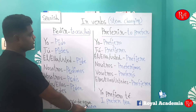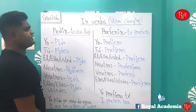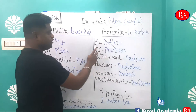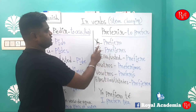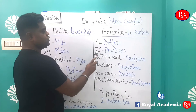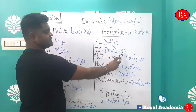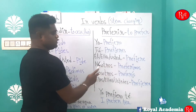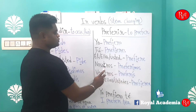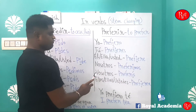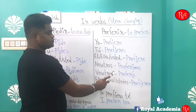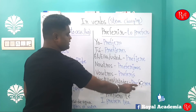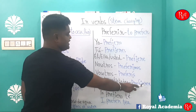The next verb is 'preferir' — 'preferir' means 'to prefer'. Yo prefiero, tú prefieres, él/ella/usted prefiere, nosotros preferimos, vosotros preferís, ellos/ellas/ustedes prefieren.